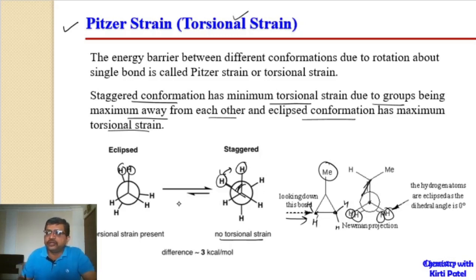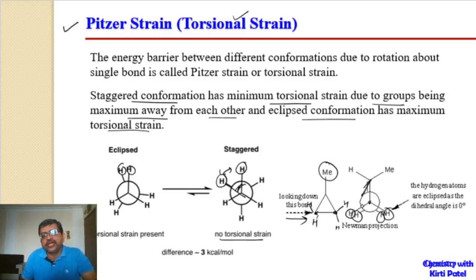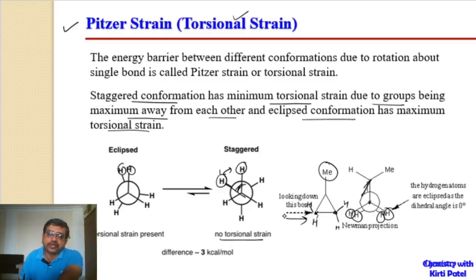When we look from different angles and different carbon atoms in the cycloalkane ring, torsional strain is present throughout. This strain was discovered and explained by Pitzer, so we call it Pitzer strain or torsional strain.